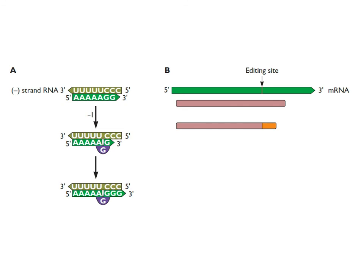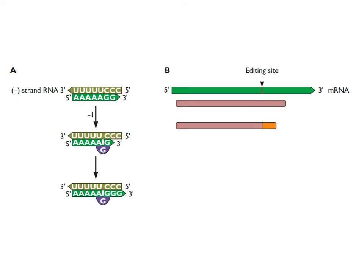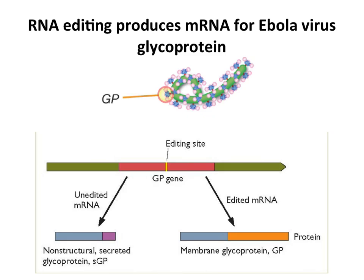The polymerase probably bumps into the stem loop and pauses, then the product slips back. The result is that the mRNA with the extra G produces a different protein downstream of that extra G. So you have two different proteins: one from the normal non-edited mRNA, and one from the edited mRNA. This happens about 10% of the time and is reproducible — another way of expanding the coding capacity of a genome. One more example is Ebola virus, which we talked about last time: filamentous enveloped viruses studded with glycoproteins needed for cell attachment and fusion.